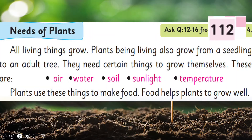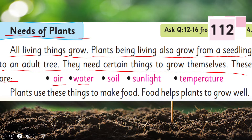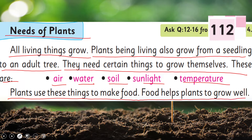My dear students, now is the time for reading. I request you all to please open page number 112 in your GK2 books. I hope everybody has opened the page. Let's start the reading — put your fingers where I will read. Needs of Plants: All living things grow. Plants, being living, also grow from a seedling to an adult tree. They need certain things to grow. These are air, water, soil, sunlight and temperature. Plants use these things to make food. Food helps plants to grow well.